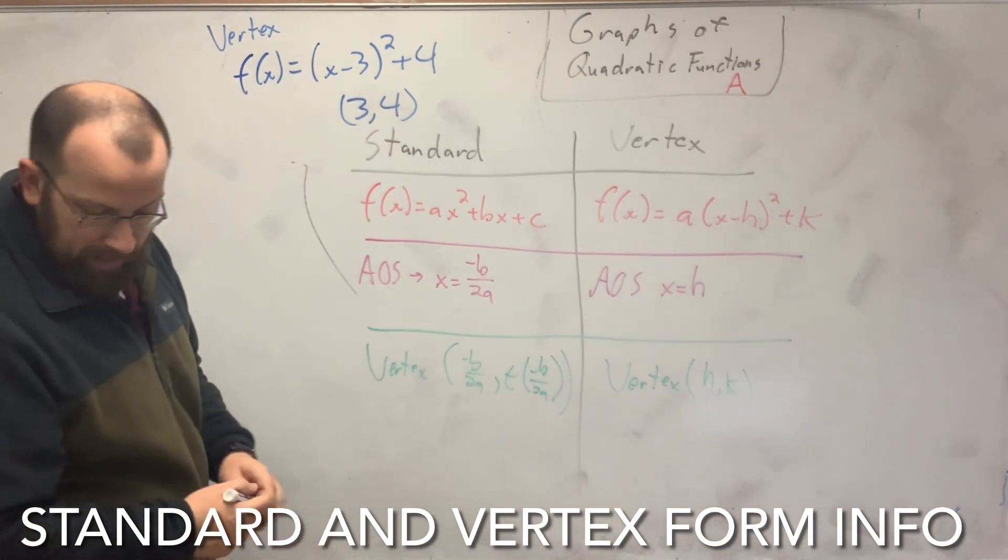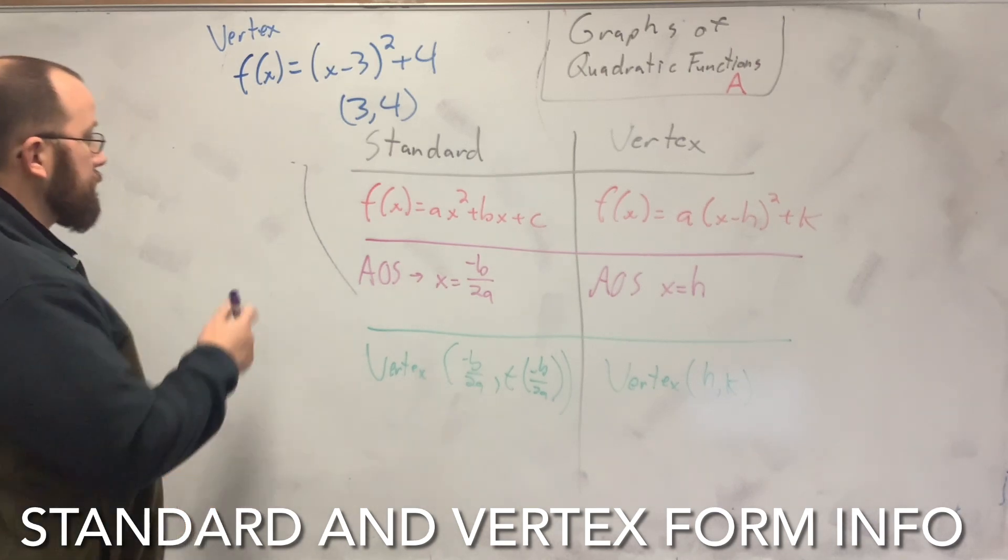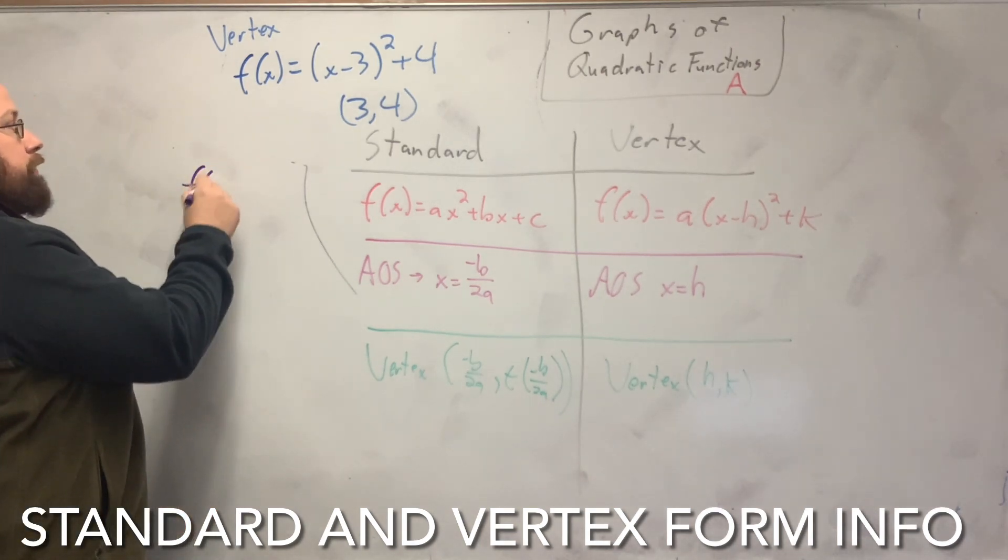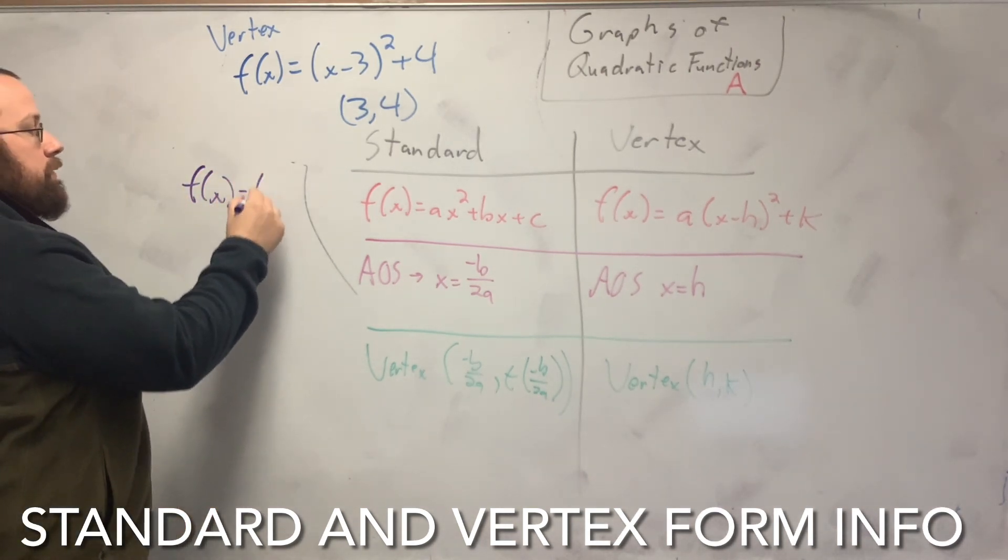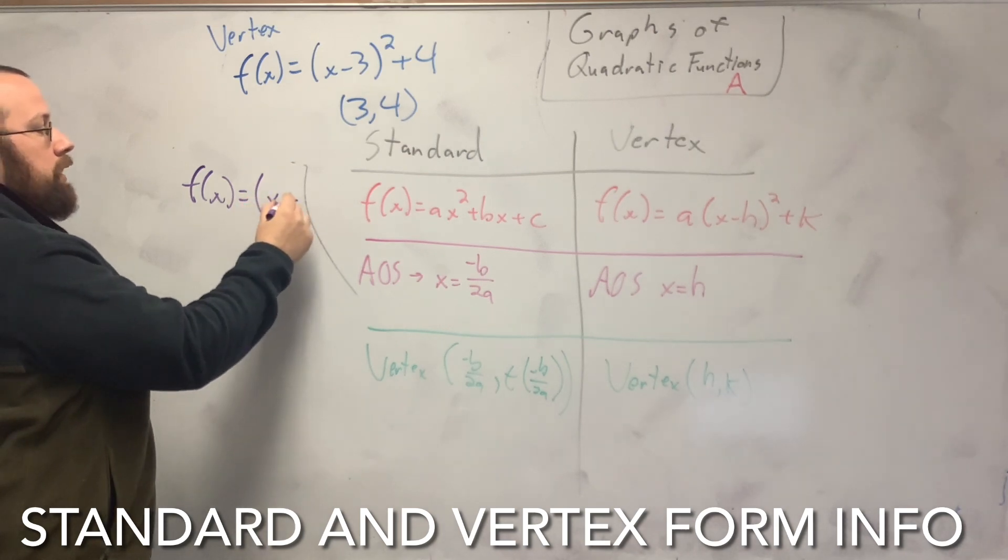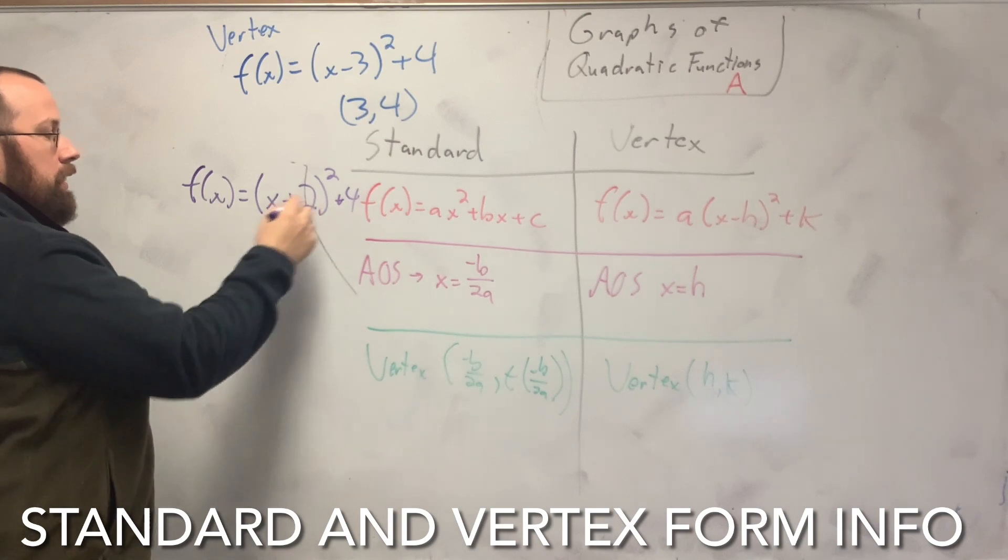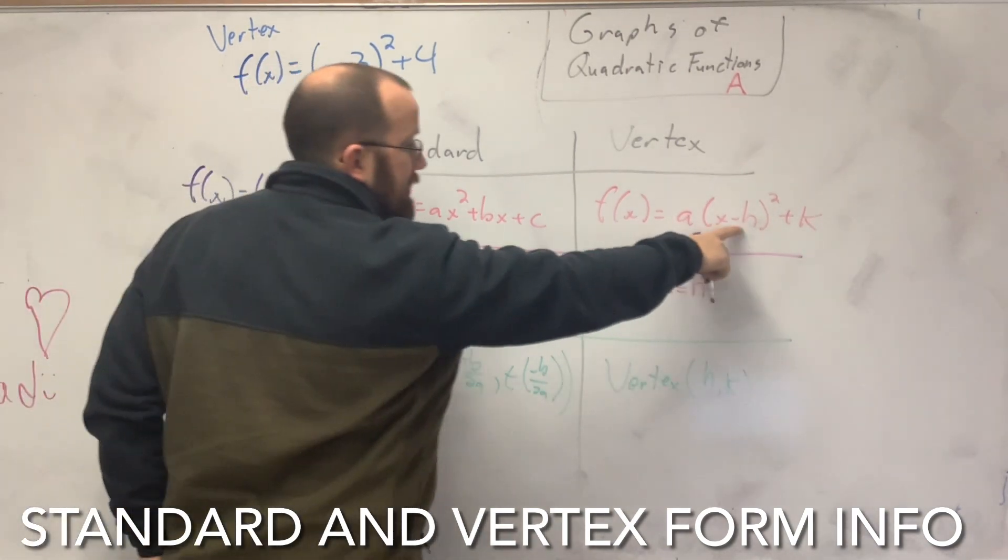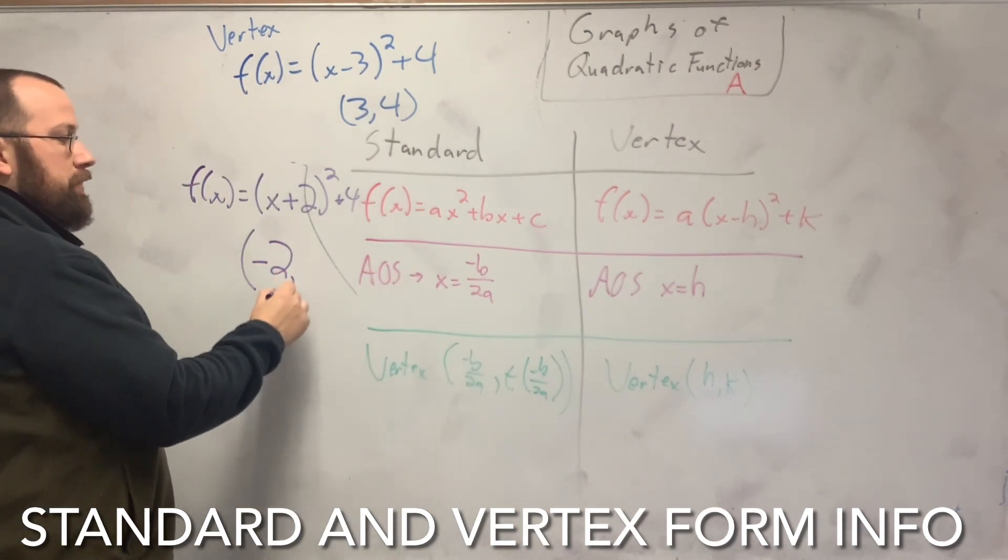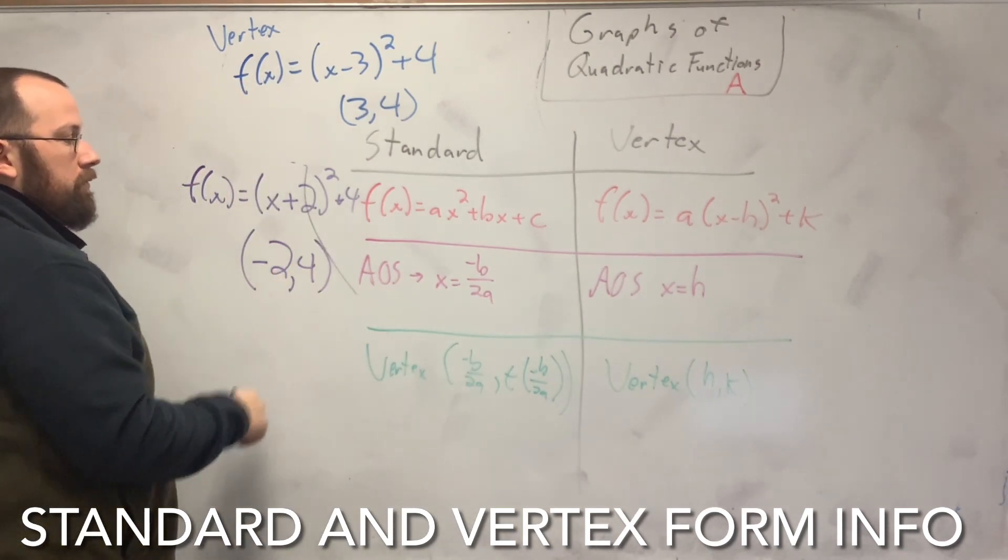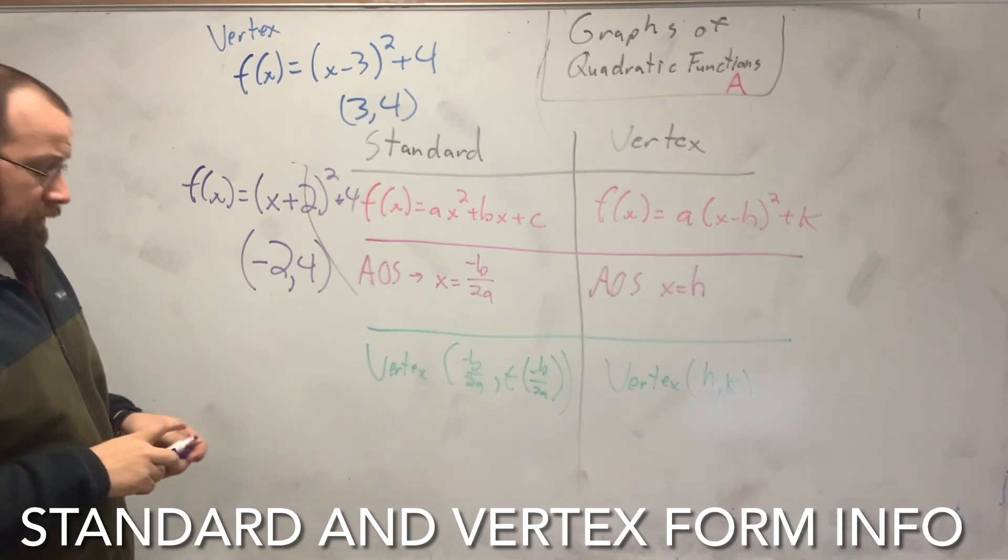If it's f(x) equals x plus 2 squared plus 4, the vertex here, since this is positive, and it's negative, you have to switch the sign when it comes out to make it negative 2, 4. That's my vertex in that vertex form.